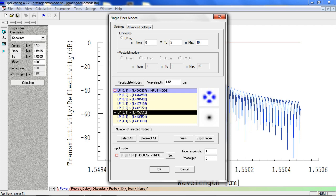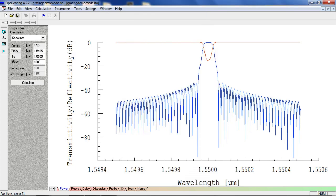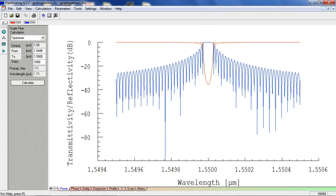We can find the reflection spectrum and transmission spectrum for a uniform grating by selecting the power tab. The transmission spectrum is in red, and the reflection spectrum is in blue.